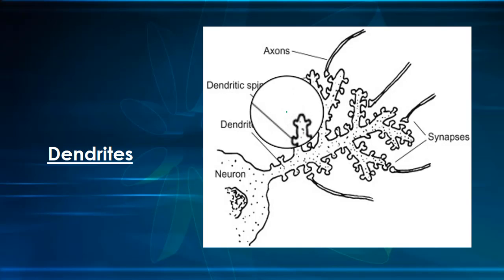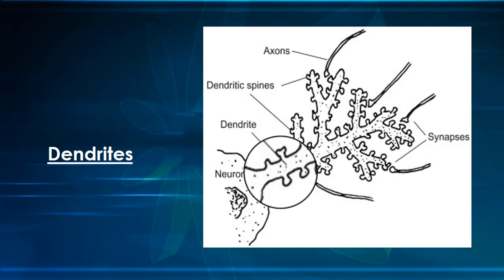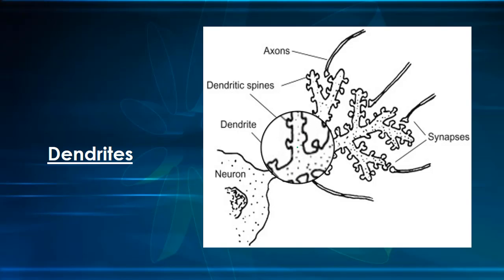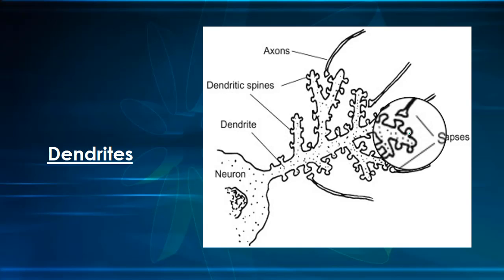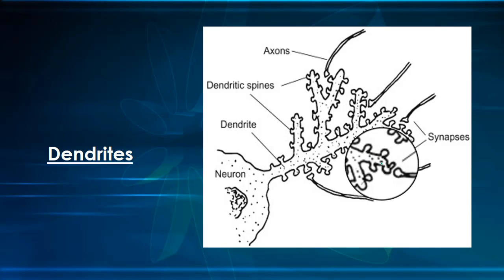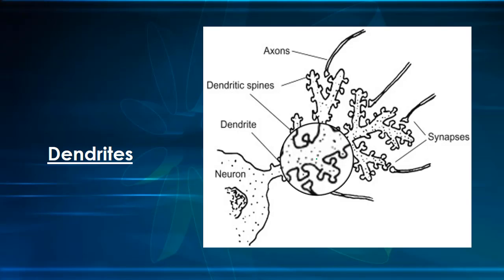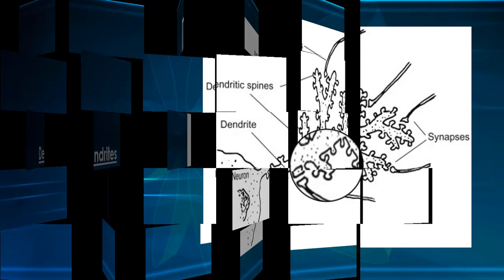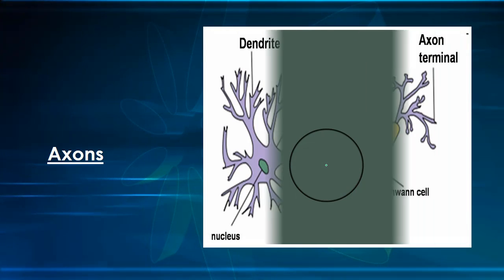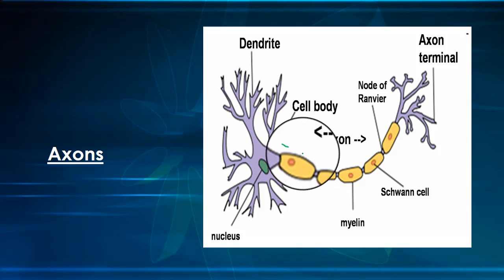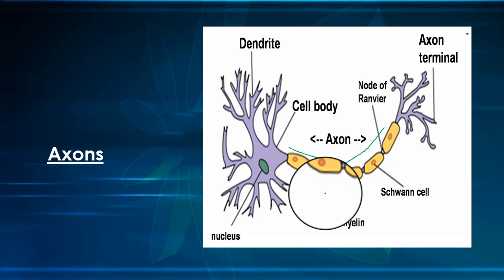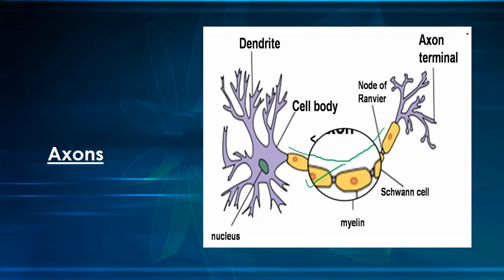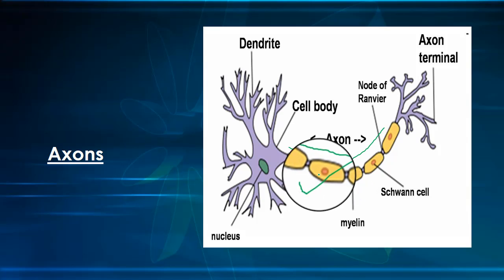The dendrites are elongated portions of the cell body; they extend outwards, receiving input from the environment and from other neurons. The axon is a long, thin structure down which action potentials are conducted. While neurons have many dendrites, most cells have only one axon.